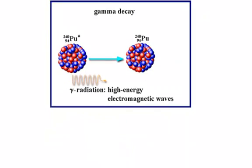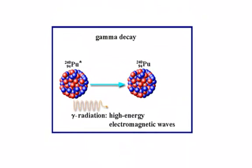And then gamma decay. Gamma decay is when an unstable nucleus just gives off electromagnetic radiation.